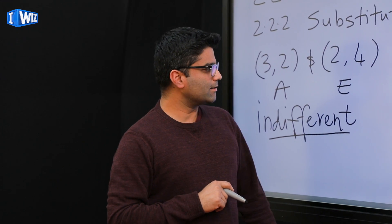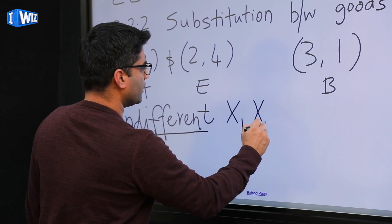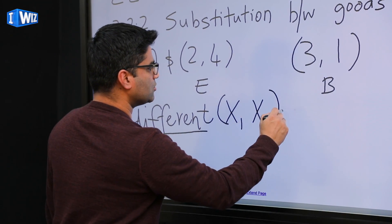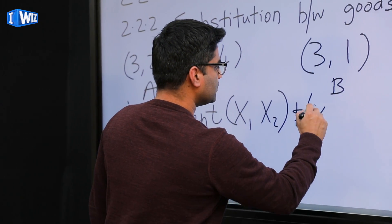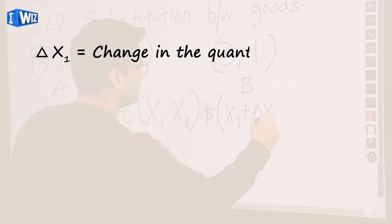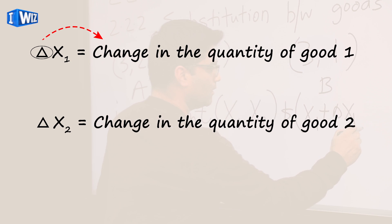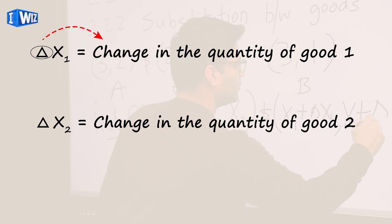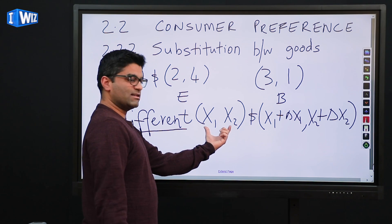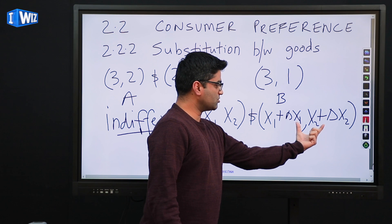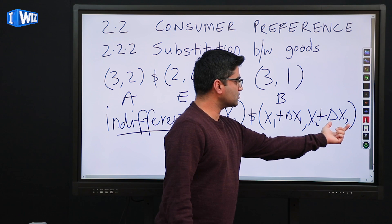Let me put this concept more mathematically. If we say we are indifferent between two bundles — the first bundle is (x1, x2) — then the way we write the second bundle is: x1 changes by delta x1, and x2 changes by delta x2. So bundle A is (x1, x2), and bundle B is (x1 + Δx1, x2 + Δx2). We are just putting it generically.